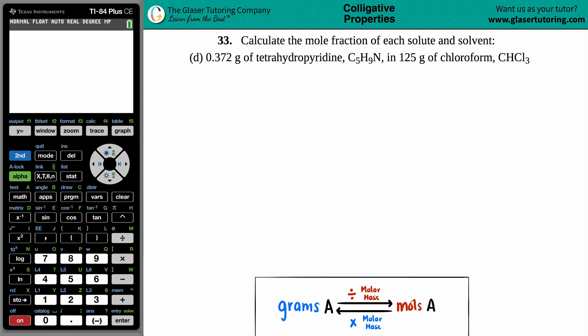Number 33, calculate the mole fraction of each solute and solvent. In this case, we have 0.372 grams of tetrahydropyridine, which is C5H9N, in 125 grams of chloroform, which is CHCl3. So we want to calculate the mole fraction of each solute and solvent.